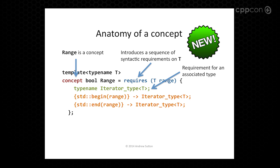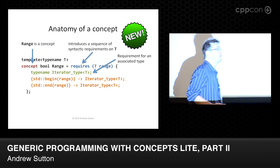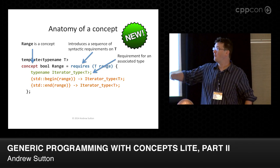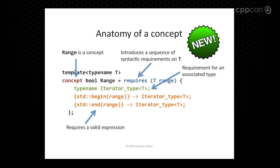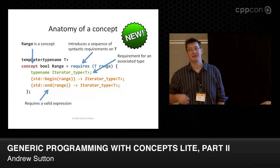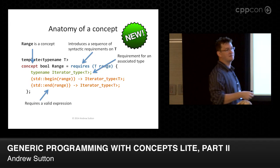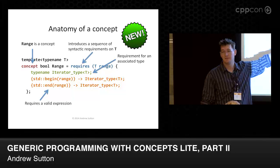We have two different types of requirements in this concept. The first is a type requirement: if you write typename something, that requires that when you substitute into it, you get something that names a type. So if you try to ask for the iterator type of an int, for example — hopefully that type doesn't define anything — you'll get a substitution failure, which is effectively the same as false. The things in curly braces wrap an expression: it's braces, expression, arrow, type. These are valid expression requirements. When you substitute into a valid expression requirement, if it doesn't yield something that actually compiles, it fails. So if I ask whether begin or end of zero is valid, those end up being false.